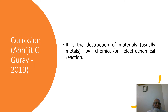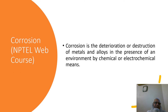This definition comes from FIJC Gaurav 2019: it is the destruction of materials, usually metals, by chemical or electrochemical reactions. This definition is taken from the NPTEL web course: corrosion is the deterioration or destruction of metals and alloys in the presence of an environment by chemical or electrochemical means.